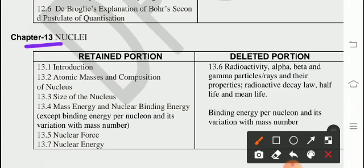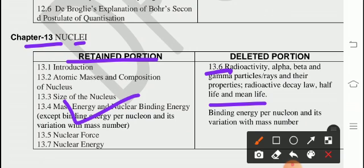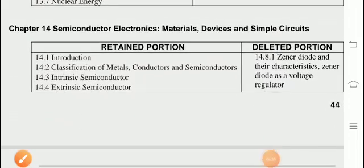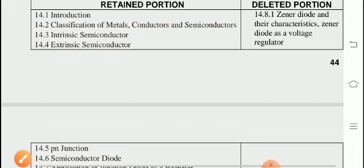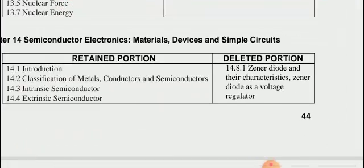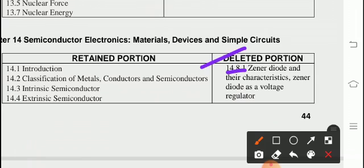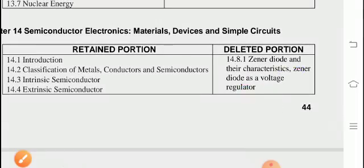12th chapter, Atoms, retained whole chapter retained, nothing is deleted from the chapter. Chapter 13, Nuclei, from this chapter most of the lesson are retained and deleted one is 6th point only. Radioactivity alpha beta gamma particles or rays and their properties, radioactive decay law, half life and mean life and binding energy per nucleon and its variation with mass number. 14th chapter, Semiconductor electronics materials devices simple circuits, in this whole chapter there, only deleted one is 14.8.1 Zener diode and their characteristics, Zener diode as a voltage regulator. So that one only deleted. Remained whole chapter retained.